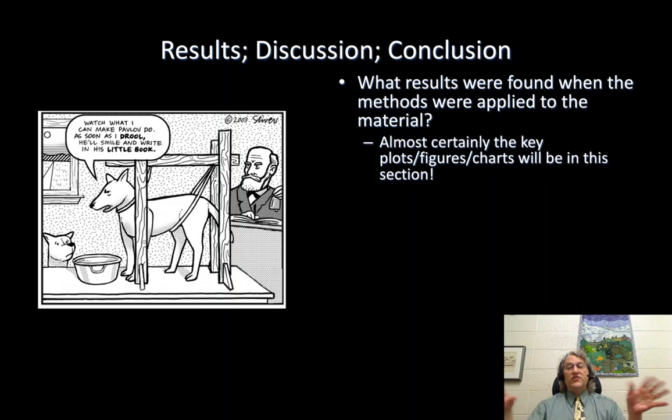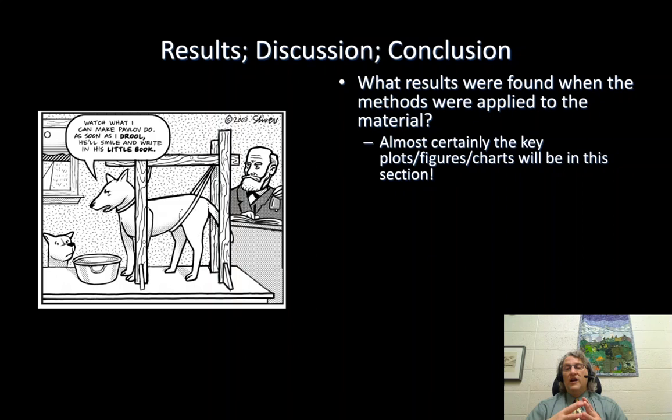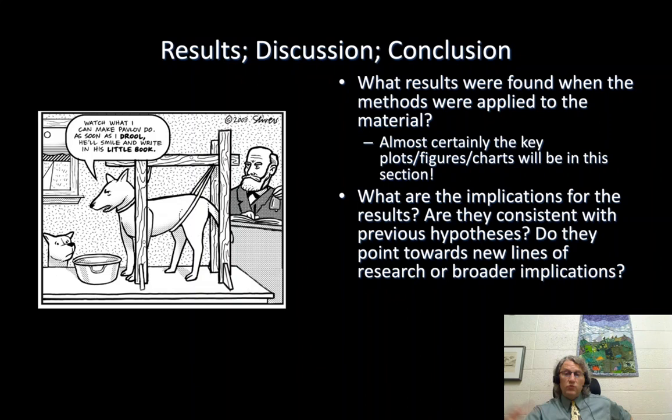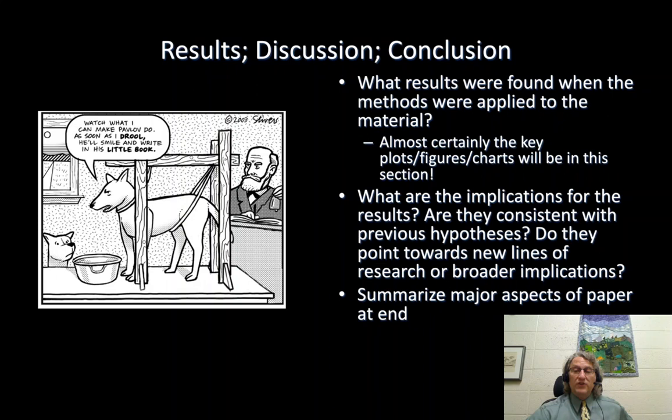I showed you an example of some of those types of charts in lecture today. And then, a discussion section: you got some results — what do they mean? Are they consistent with previous hypotheses? Do they overturn previous hypotheses? Do they point towards new lines of research, or are there broader implications? Why was the study important? And then finally, at the end, the conclusion — you summarize the major aspects of the paper. There's the old saying about how you present information in the military: you tell them what you're going to tell them, then you tell them, and then you tell them what you told them. Scientific papers do the same thing: abstract, body, conclusion.